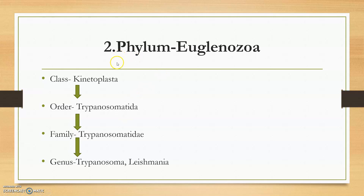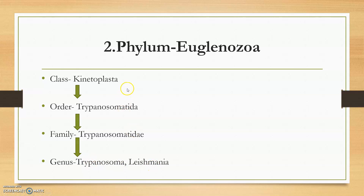Moving to the second phylum — phylum Euglenozoa. It has the class Kinetoplastia, order Trypanosomatida, family Trypanosomatidae, and the genera in this family are Trypanosoma and Leishmania. That completes the second phylum.